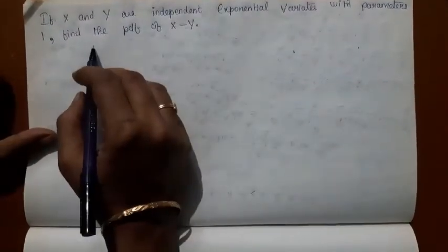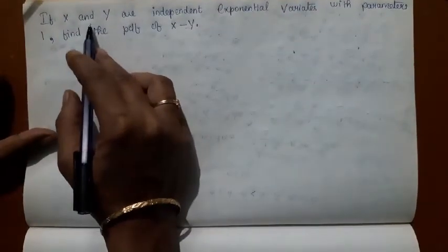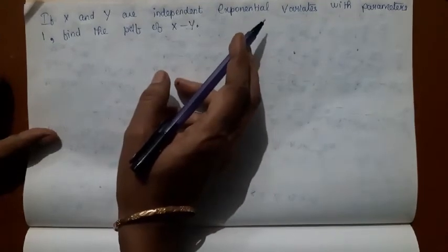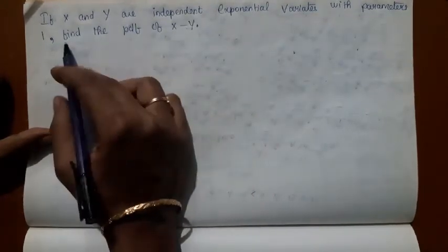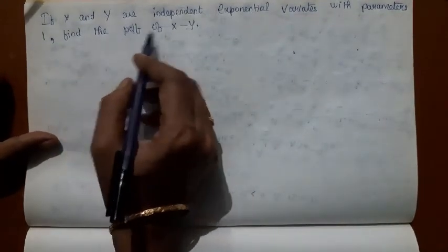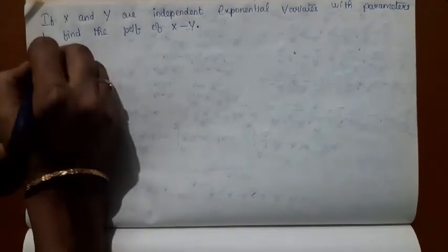Let us consider this problem. X and Y are independent exponential variates with parameters 1. Find the PDF of X minus Y.